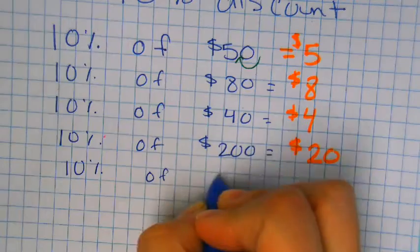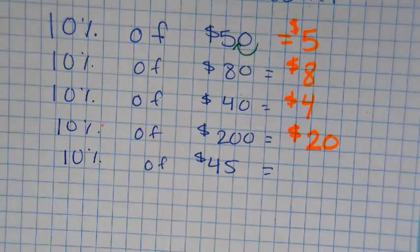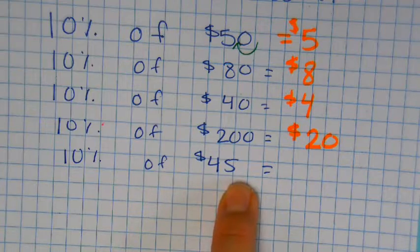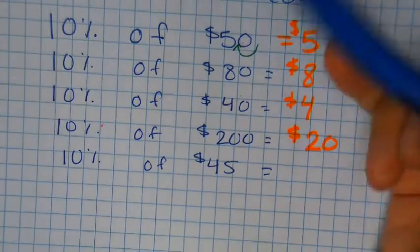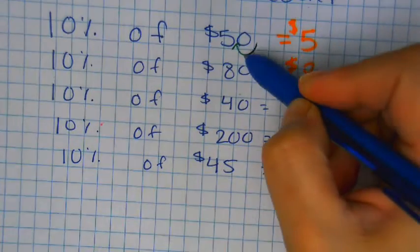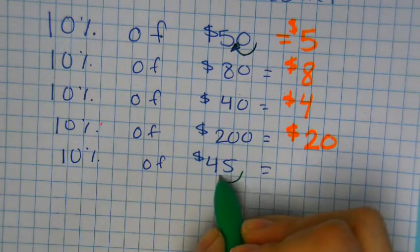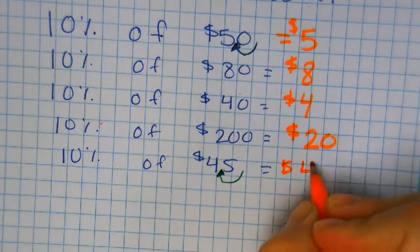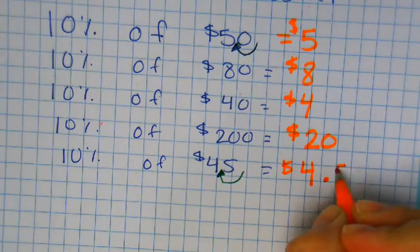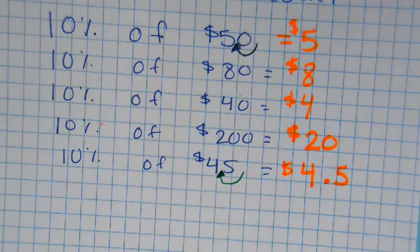10% of 45 dollars — there's no zero to get rid of, and I can't get rid of the five because it's not a zero. What you do is you go back to what I told you: you just move the decimal one time. So here I would move the decimal one time and it would be four dollars and fifty cents. 10% is a very small percent.